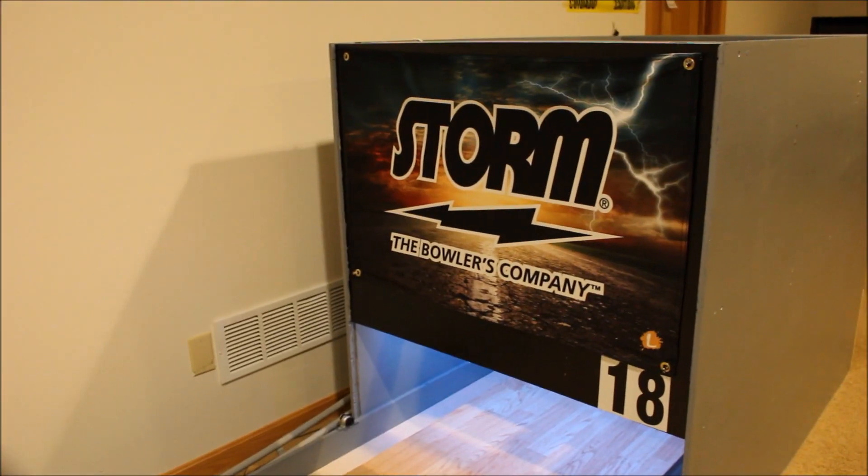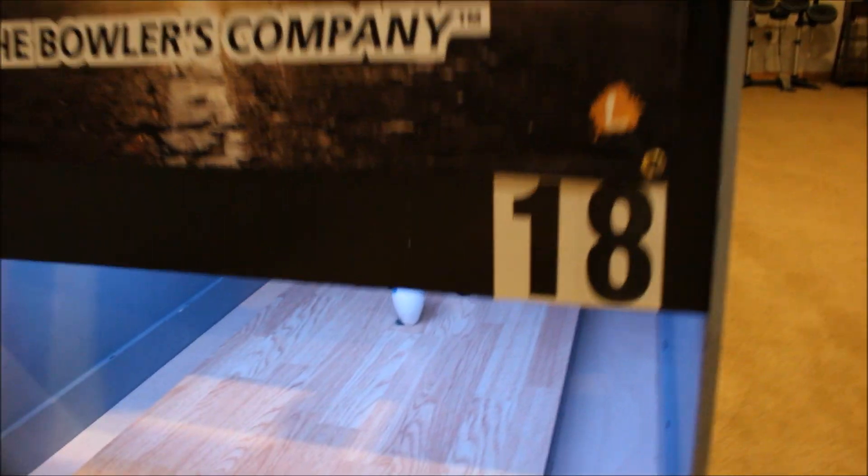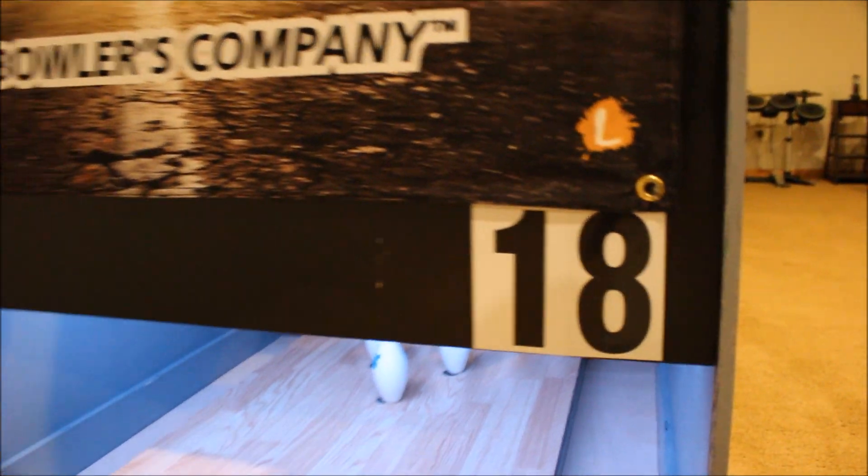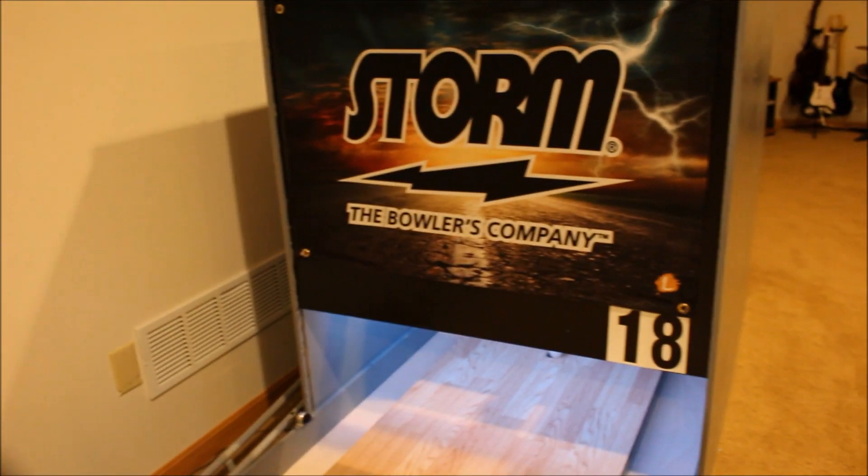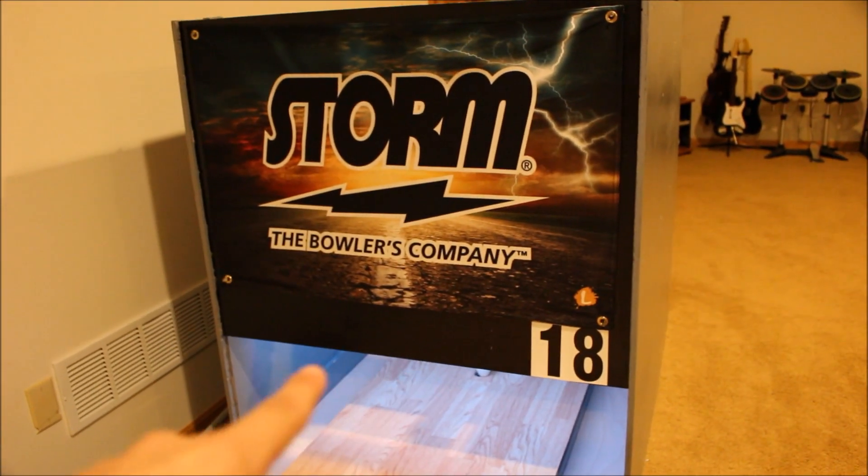And I also painted the masking unit in black and I put the lane number on. I will probably put the Brunswick on the bottom down here, just like it does there on the banner.